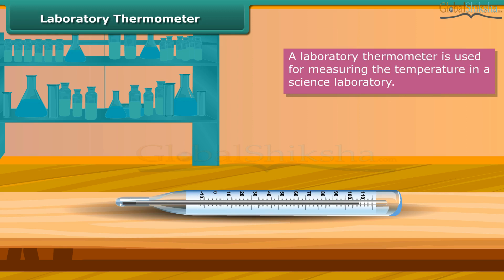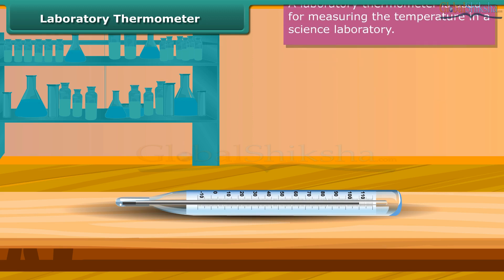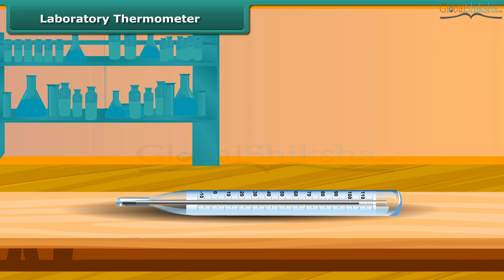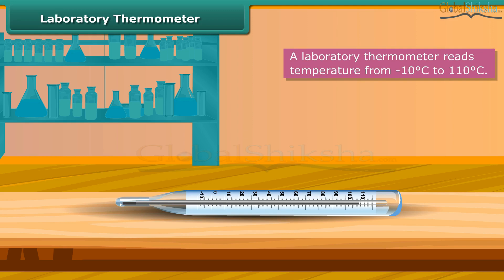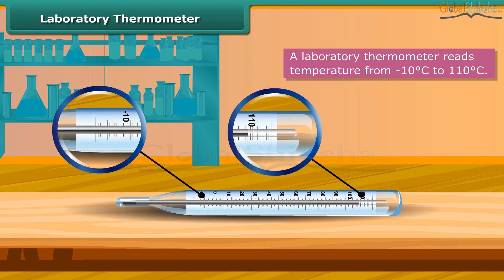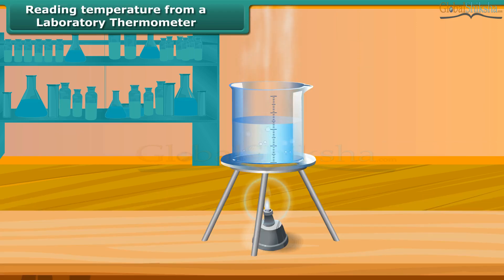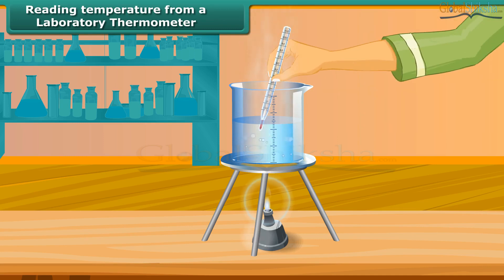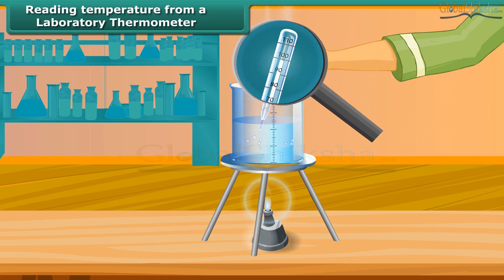A laboratory thermometer is used for measuring temperature in a science laboratory. It is similar to a clinical thermometer but is longer and narrower. A laboratory thermometer reads temperature from minus 10°C to 110°C. To measure the temperature of hot water in a beaker, take a laboratory thermometer and immerse the bulb in the hot water. Watch the shining thread of mercury moving up in the thermometer tube. After some time, the mercury thread will stop rising; read the temperature corresponding to the top of the mercury thread — this is the temperature of the hot water.